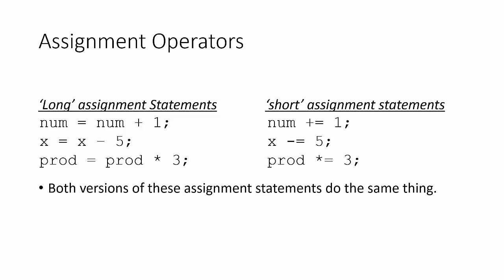Both versions of these assignments do exactly the same thing — they're both taking the old version of num, adding one to it, and assigning it to the variable. This is just a shortcut to save some time. Using these shorter assignment operators is just a matter of preference; there's really no benefit other than a little less typing. In fact, most of the time I tend to still use the long way because I feel it's a little more explicit and makes the code easier to read.